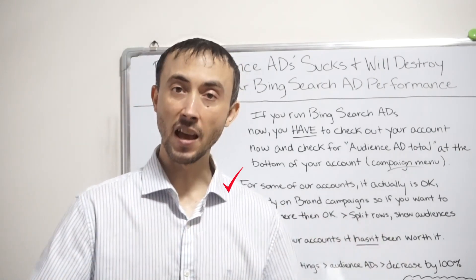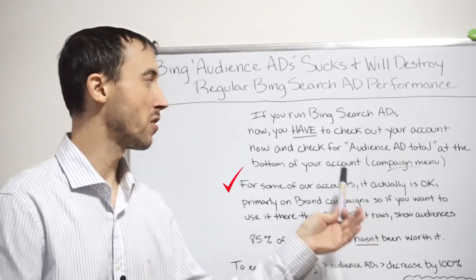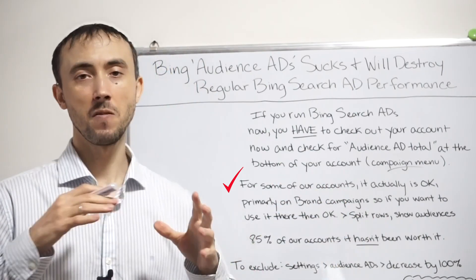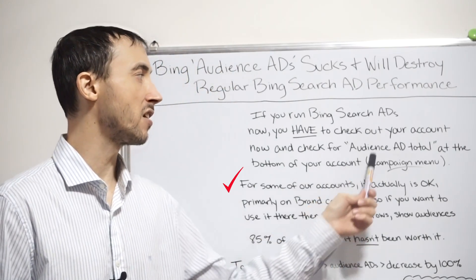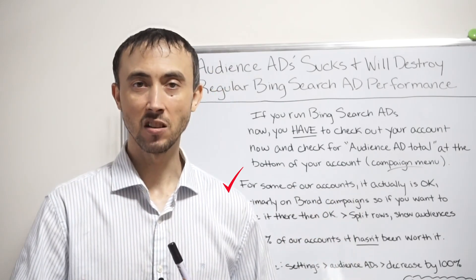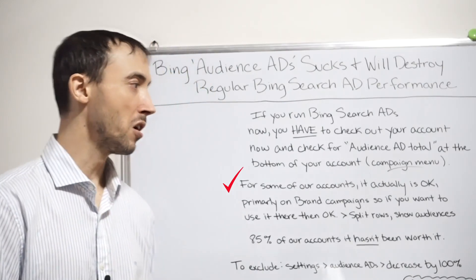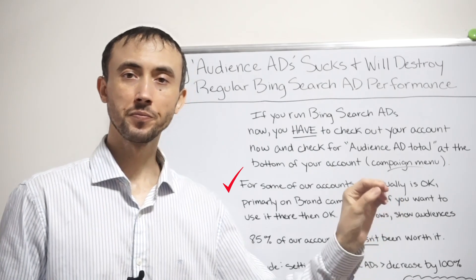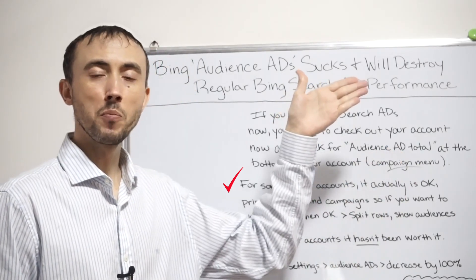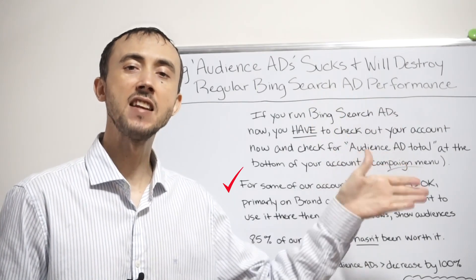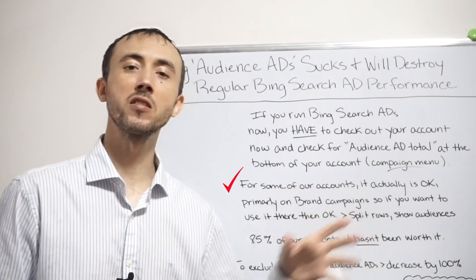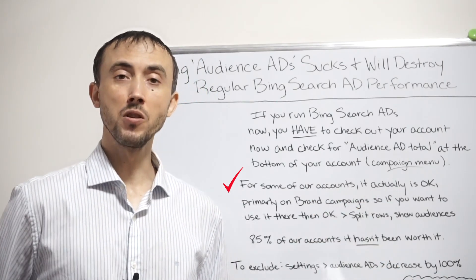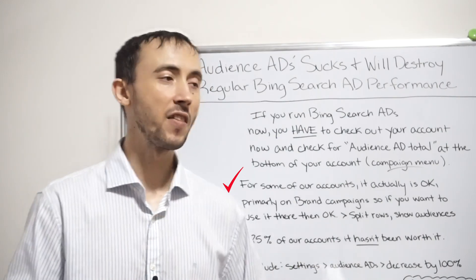If you want to know if you should be running it at all, look at the bottom of your campaigns menu — it'll show you the sales and cost per lead compared to your search ads. If the audience ads show a cost per lead and you're getting sales, go to the segment menu, click on audience, then audience name. That'll show you on each campaign how many sales you were getting from the audience ad network, so you can preserve the small bit of value and get rid of the rest.